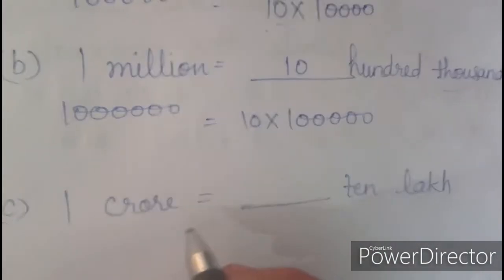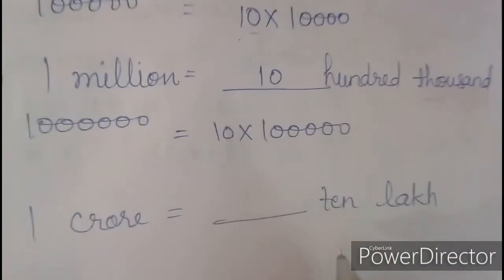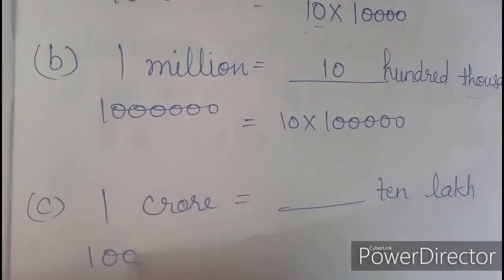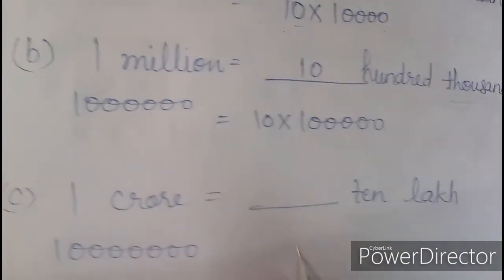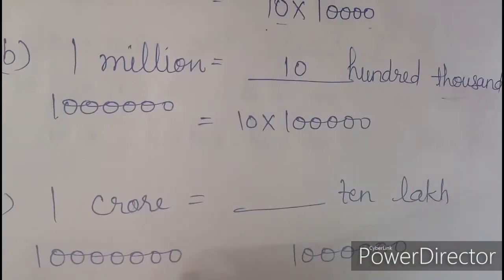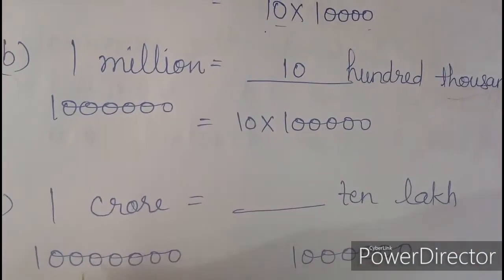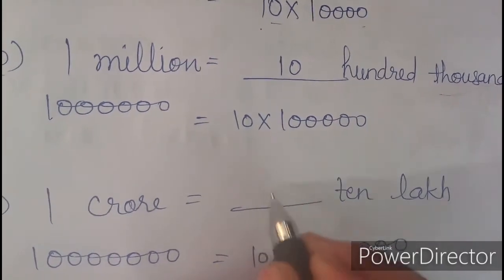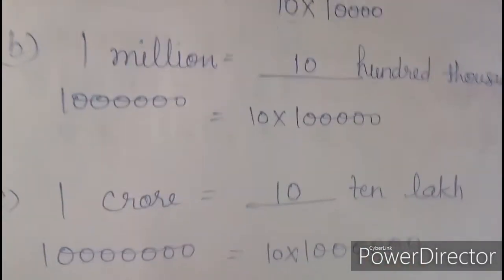Now, question number C: 1 crore is equal to dash 10 lakh. 1 crore has 7 zeros, and 10 lakh has 6 zeros. Now how can we make them equal? Multiply it with 10. So now you can write here 10, 10 lakh.